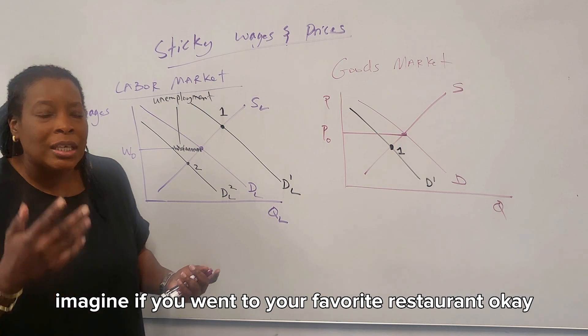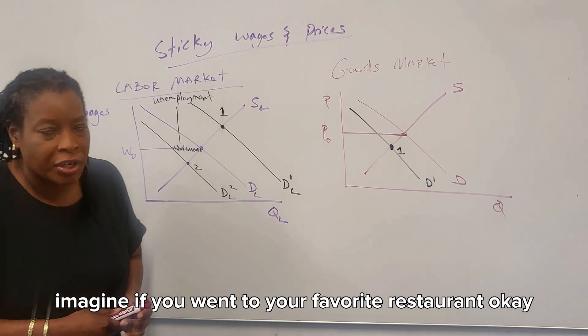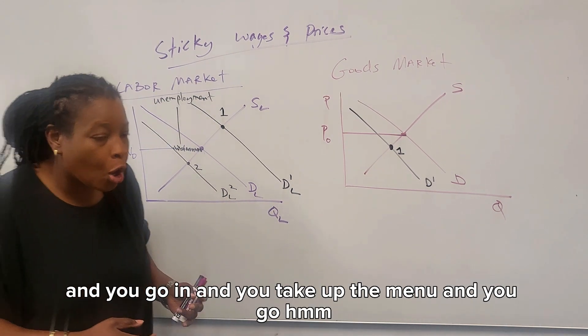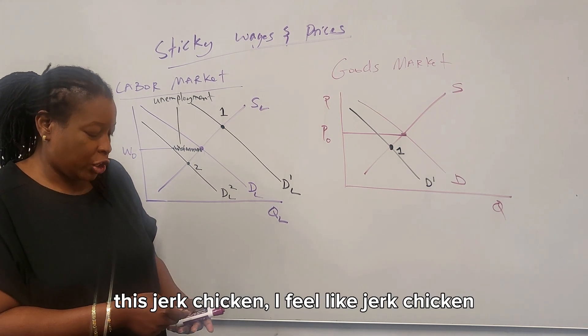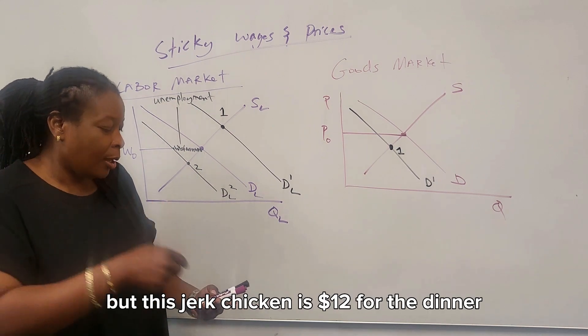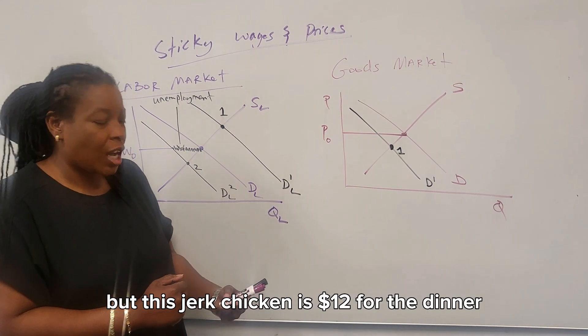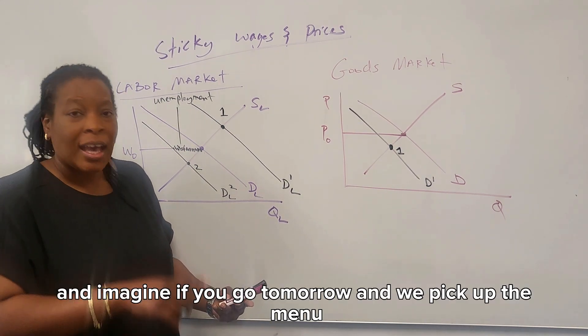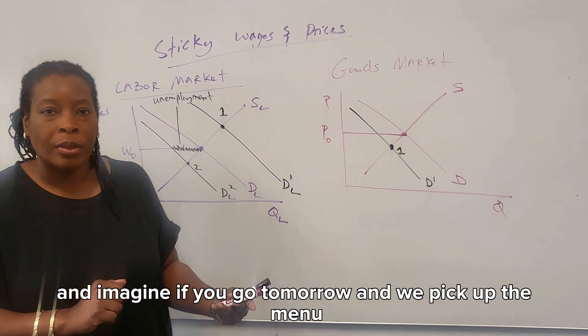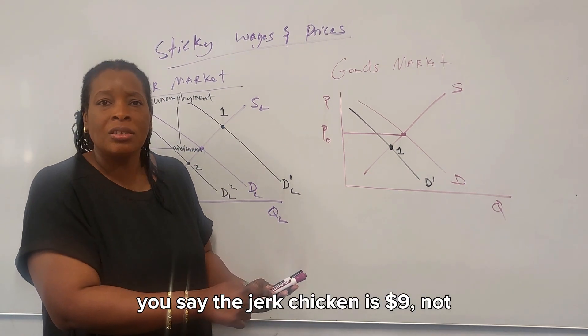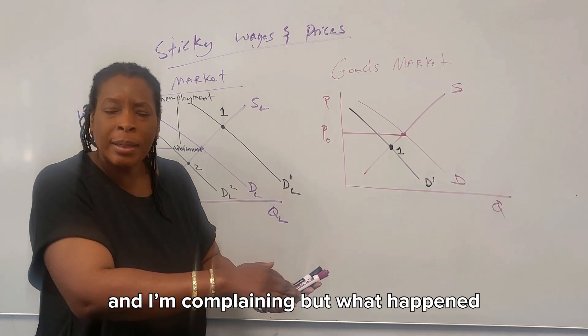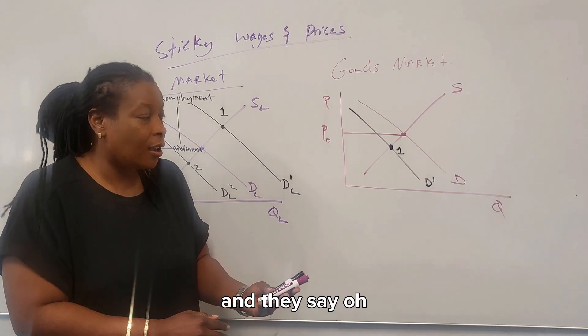You don't go to a restaurant. Imagine if you went to your favorite restaurant and you go in and you take up the menu and you go, this jerk chicken is $12 for the dinner. That's great. And imagine if you go tomorrow and when you pick up the menu, you say, the jerk chicken is now $9. And I'm complaining, but what happened? And they say, oh, the negative shock in the economy. We are adjusting.